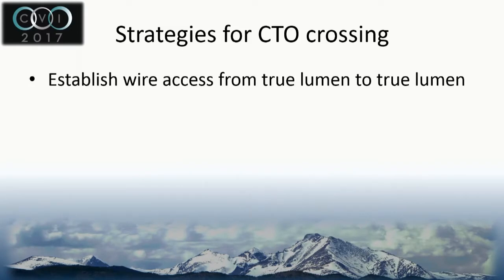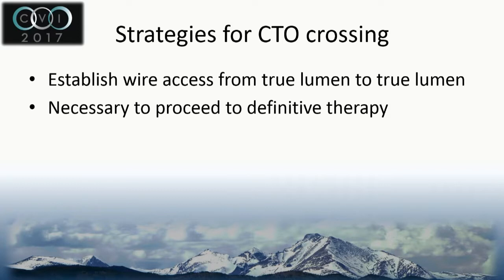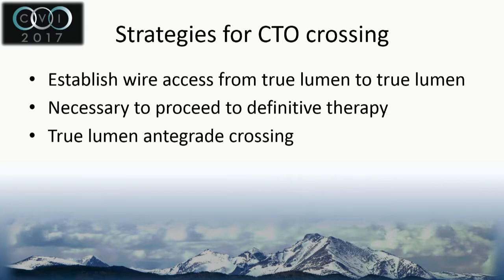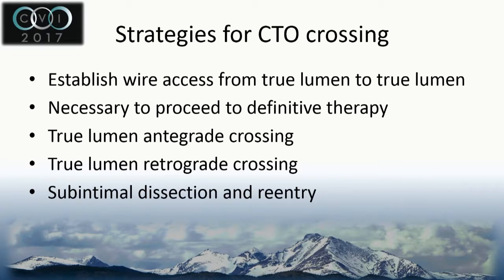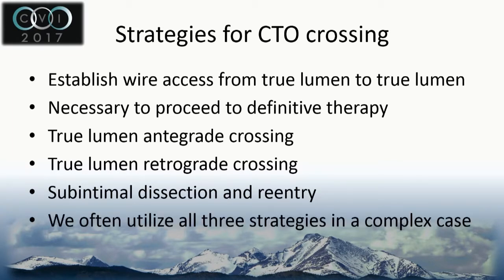For CTO crossing, the primary goal is to establish wire access from trulumen to trulumen. This isn't necessary to proceed to definitive therapy. We've talked about trulumen antegrade crossing, but you also have the opportunity to get retrograde access and cross trulumen retrograde. We also talk about subintimal dissection re-entry, but a lot of the times we utilize all three strategies in complex everyday cases.